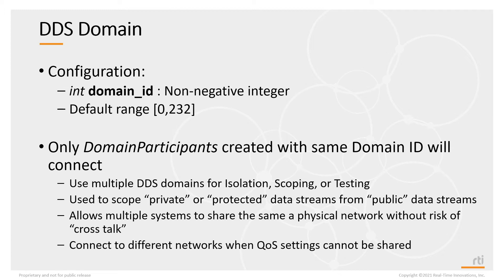This is very similar to the ability to create VLANs — virtual LAN networks on a physical LAN. When you use different domain IDs, it allows you to run perhaps multiple instances of the same system on a network, maybe for development or testing, and you're assured that the systems don't actually interact with each other.